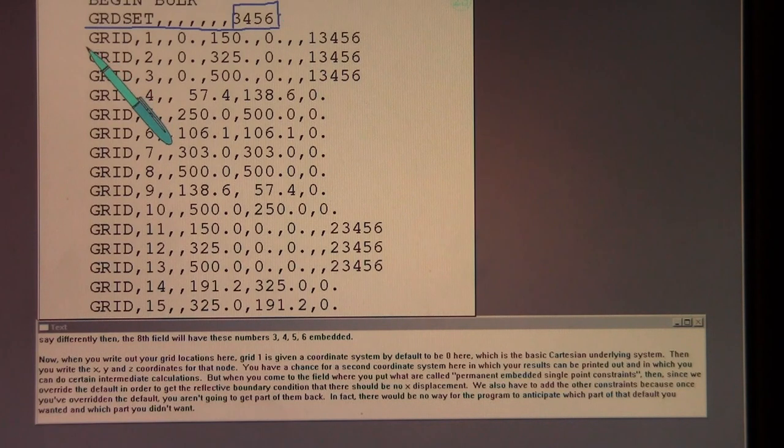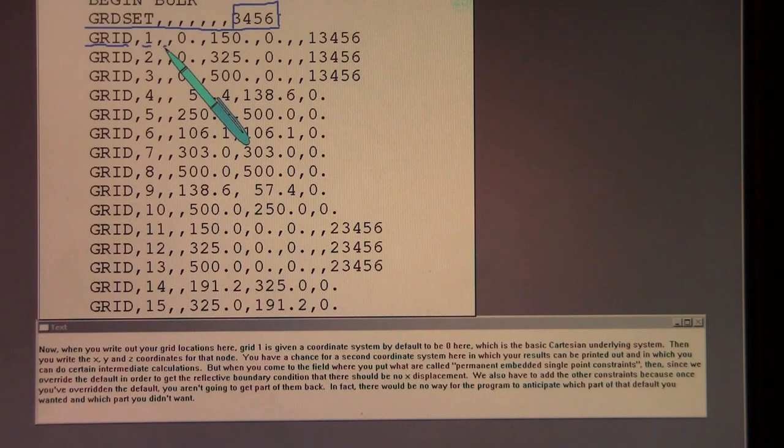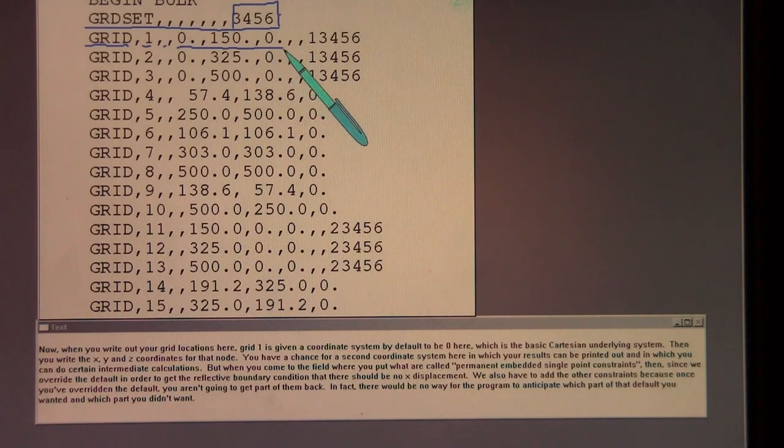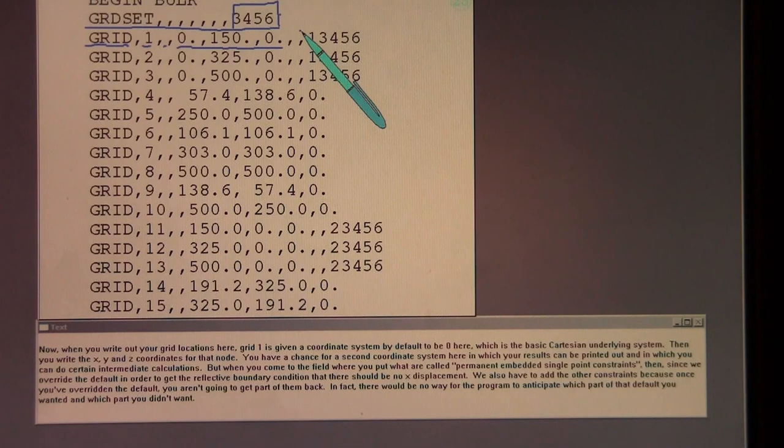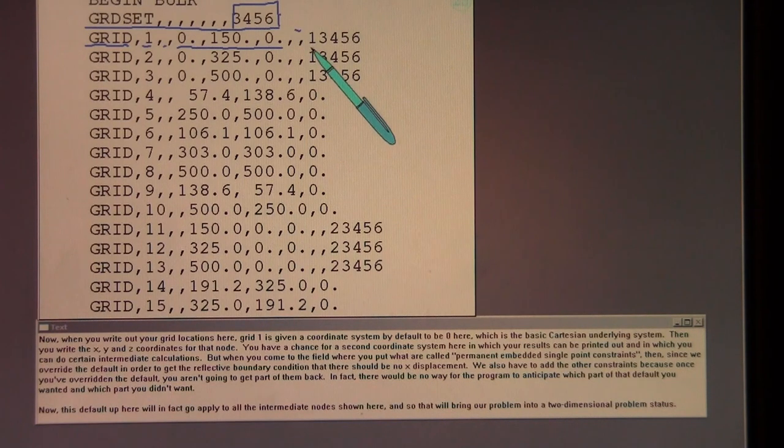Now, when you write out your grid locations here, grid 1 is given a coordinate system by default to be 0 here, which is the basic Cartesian underlying system. Then you write the x, y, and z coordinates for that node. You have a chance for a second coordinate system here in which your results can be printed out, and in which you can do certain intermediate calculations.